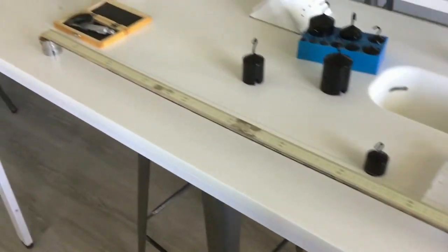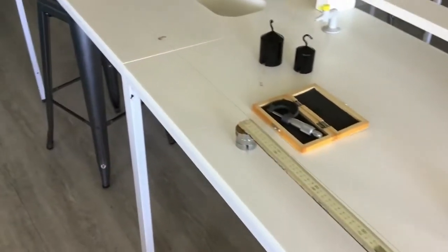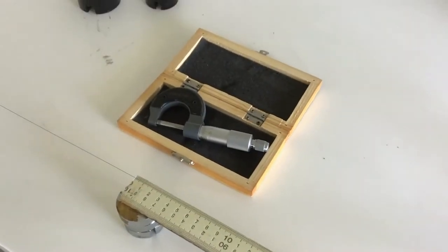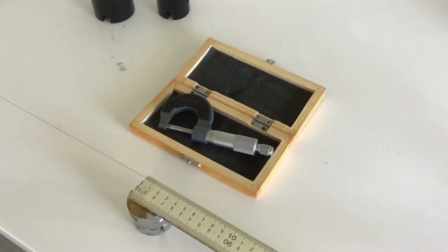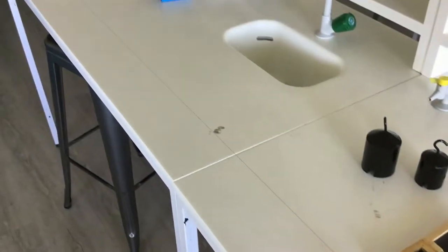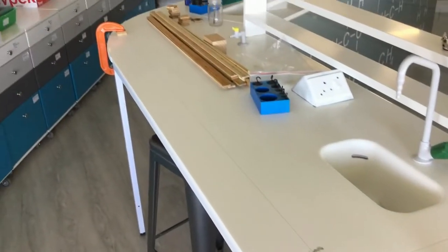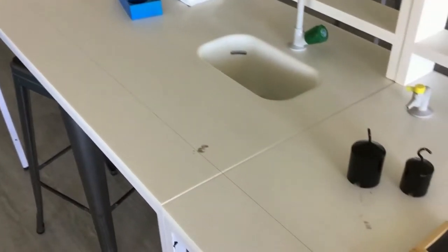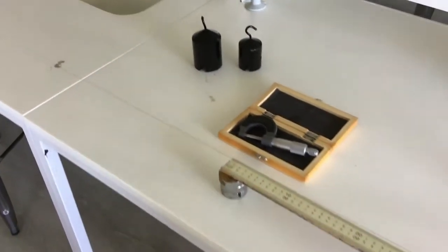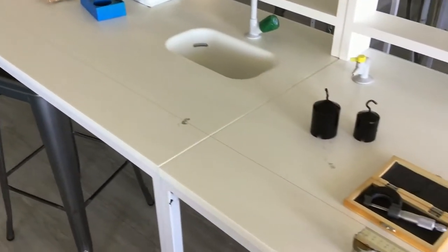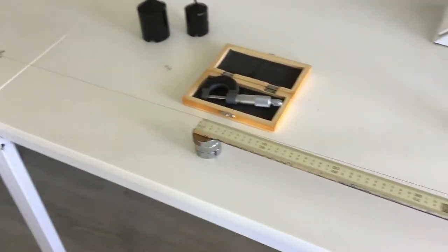Now to find the Young's modulus of a material you need to know the cross-sectional area. So to find the cross-sectional area you're going to use the micrometer here and measure about five different points along the wire. Once you find the diameter, you can find the cross-sectional area by using the formula pi d squared over 4 or pi r squared.